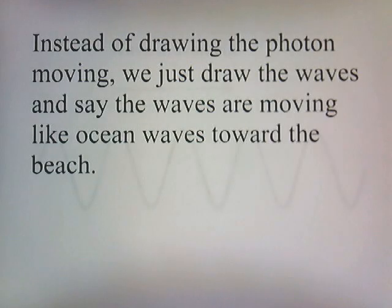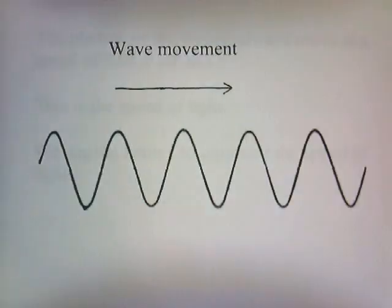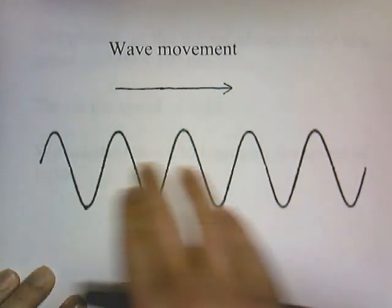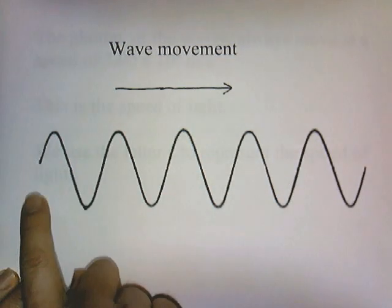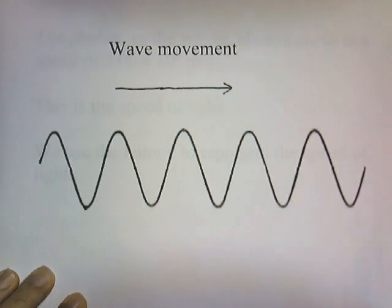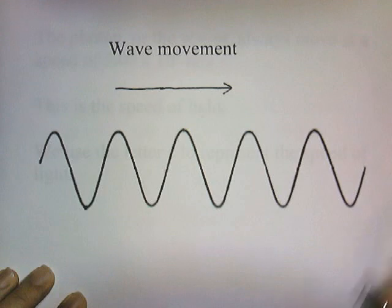Instead of drawing the photon moving, we just draw the waves and say the waves are moving like ocean waves toward the beach. This is the same picture, only without a little photon at the end. In the same way that you see ocean waves moving across, we say the photon moves — and to show that, we just show these waves that are moving.